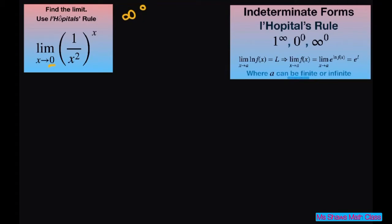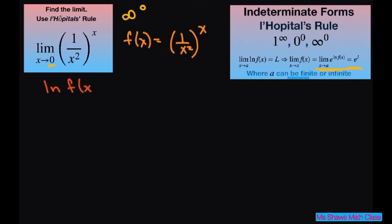So that means I'm going to use this formula here to find my limit. I'm going to let f of x equal 1 divided by x squared to the x power. Then I'm going to take the natural log of both sides — taking the natural log of f of x — and then take the natural log of 1 divided by x squared, and move this x in front.